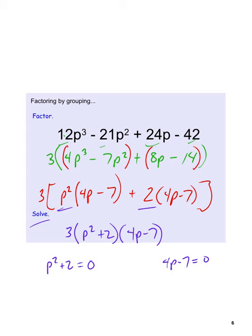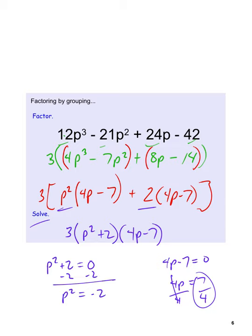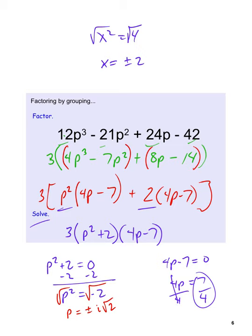To solve, p squared plus 2 equals 0 and 4p minus 7 equals 0. From the second: 4p equals 7, so p equals 7/4. For the first, subtracting 2 from both sides gives p squared equals negative 2. Taking the square root gives p equals plus or minus the square root of 2, but since we're taking the square root of a negative, we have an imaginary root: p equals plus or minus i root 2.